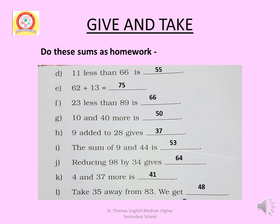D: 11 less than 66. Less means subtraction — subtract 11 from 66. 66 minus 11 equals 55. E: 62 plus 13. Add 13 to 62. 62 plus 13 equals 75. F: 23 less than 89. Less means subtraction — subtract 23 from 89. 89 minus 23 equals 66.